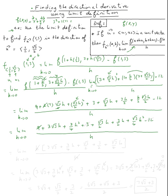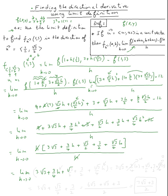Now 9 + 3 = 12, and minus 12 cancels to zero. Factoring out h from the numerator: h times (3√3 + (3/4)h + √3/2 + 3/2 + (√3/4)h), divided by h. The h cancels, leaving: 3√3 + (3/4)h + √3/2 + 3/2 + (√3/4)h.